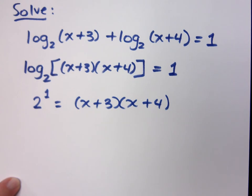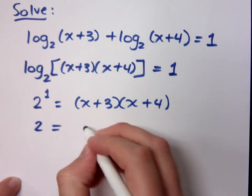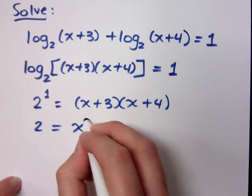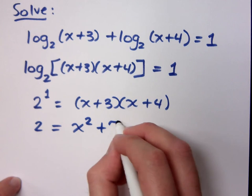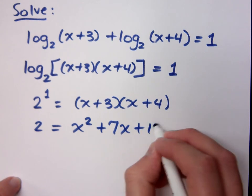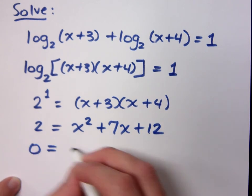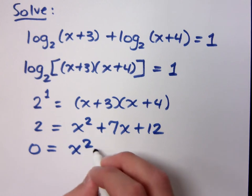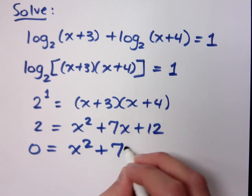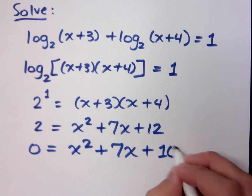I know how to do that one. Do you? It should be quadratic, right? 2 equals what? x squared plus 7x plus 12, which means 0 equals x squared plus 7x plus 10.